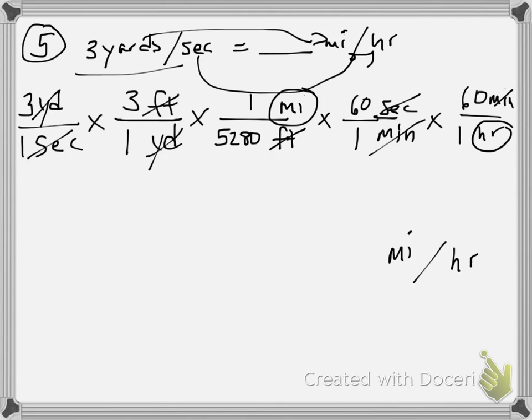So multiplying across the top, I'd have 3 times 3 times 1 times 60 times 60. This is another big number, 32,400. Remember, that's miles right now. And then multiplying across the bottom, 1 times 1 times 5,280 times 1 times 1 is 5,280. And that's in hours.